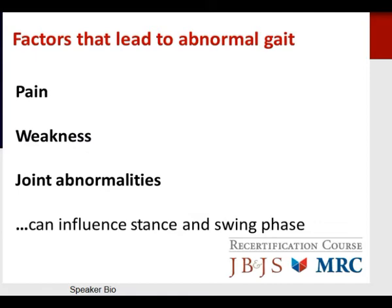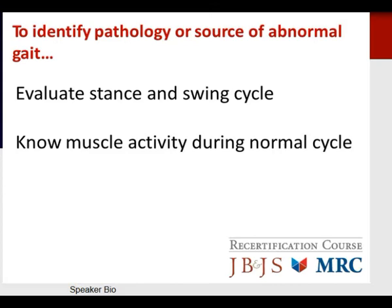Factors that lead to abnormal gait include pain, weakness, and joint abnormalities, which can influence both the stance and swing phase aspects of gait. To identify pathology or a source of abnormal gait, one must evaluate the stance and swing cycle and have an understanding of muscle activity during a normal cycle.